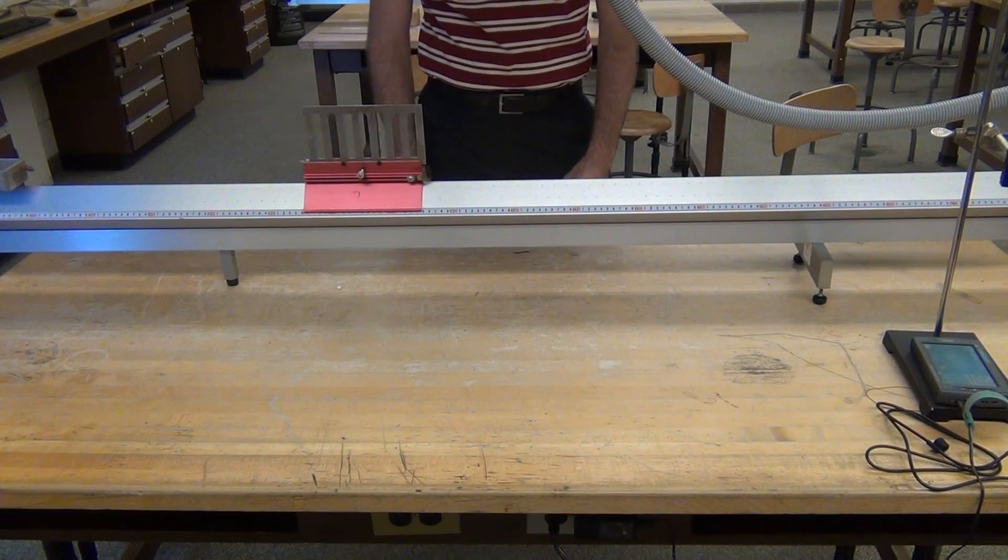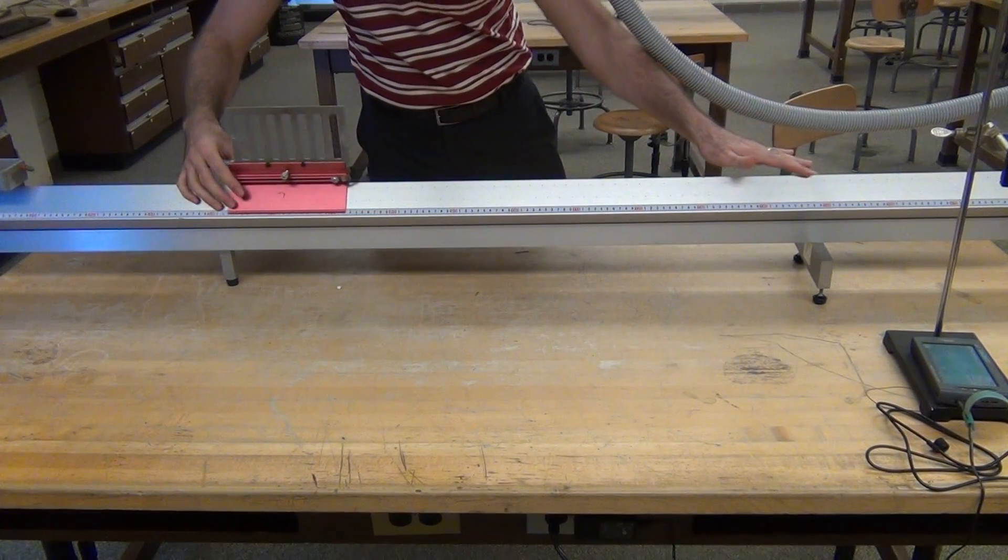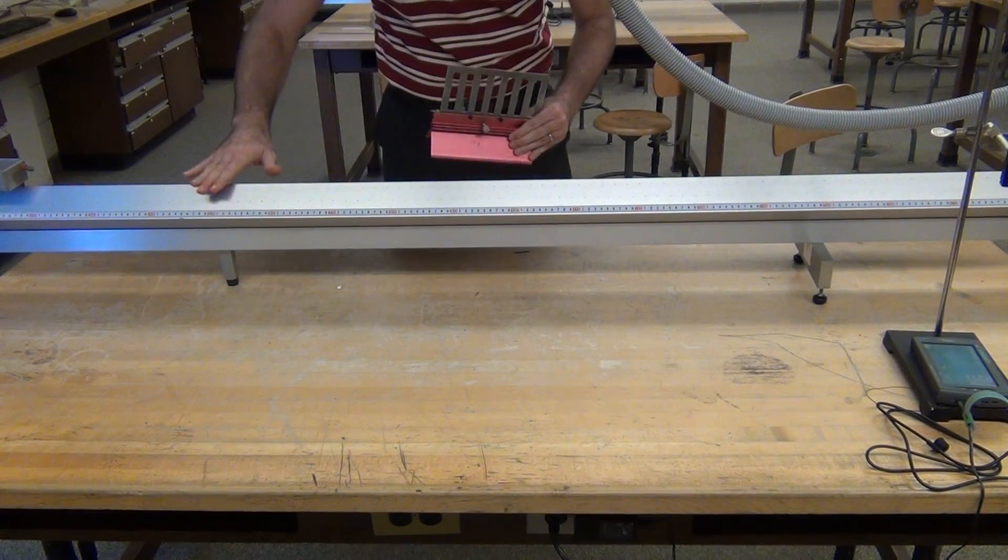that tells me that the air track has a tilt to it and that this side is higher than this side.